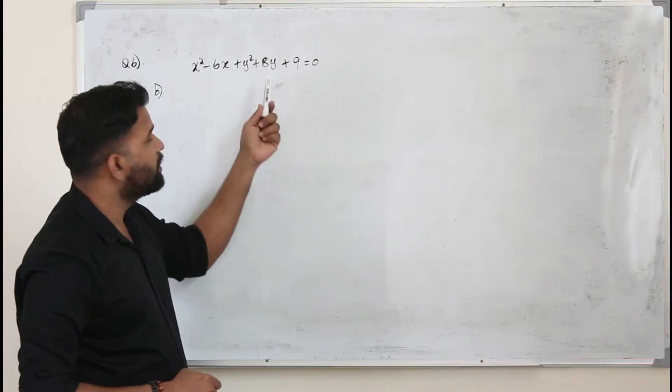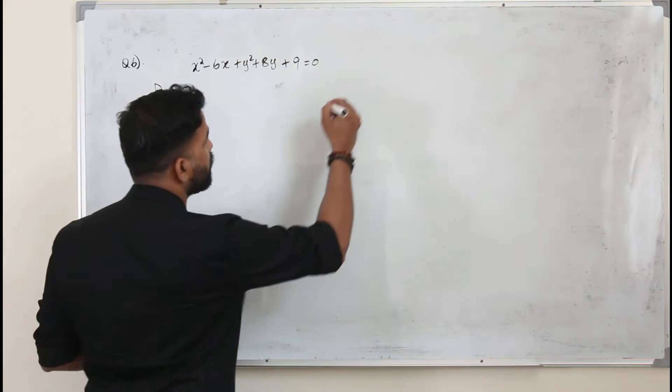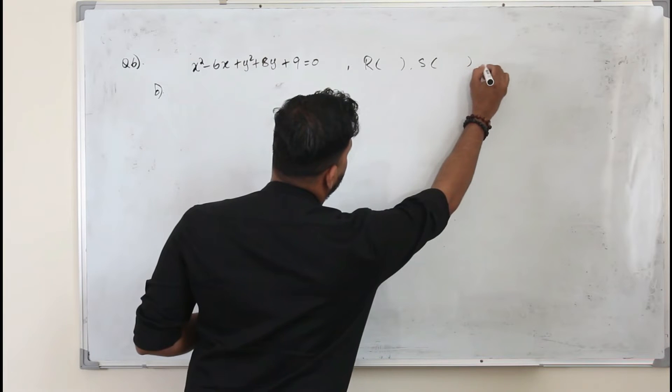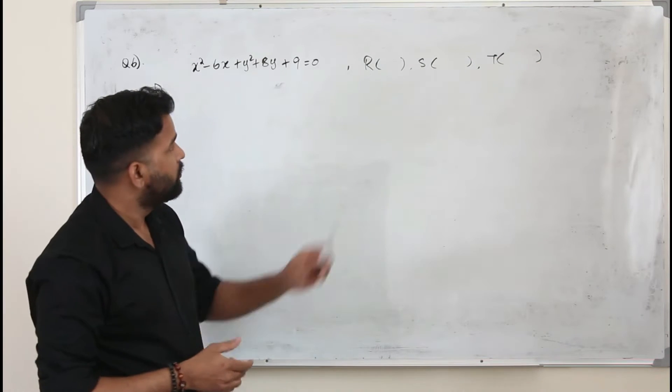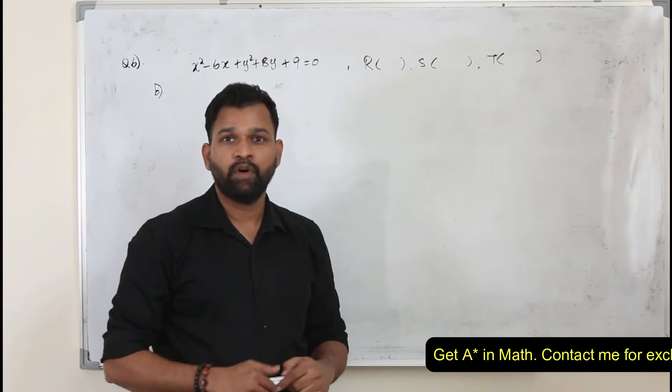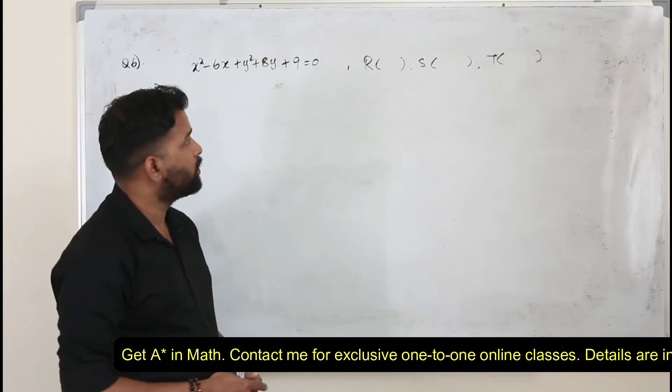Now this circle meets the coordinate axis x and y axis at three points r, s and t. And we are going to find the area of this triangle joining these three points r, s, t. So first we need to find the coordinates of the points.